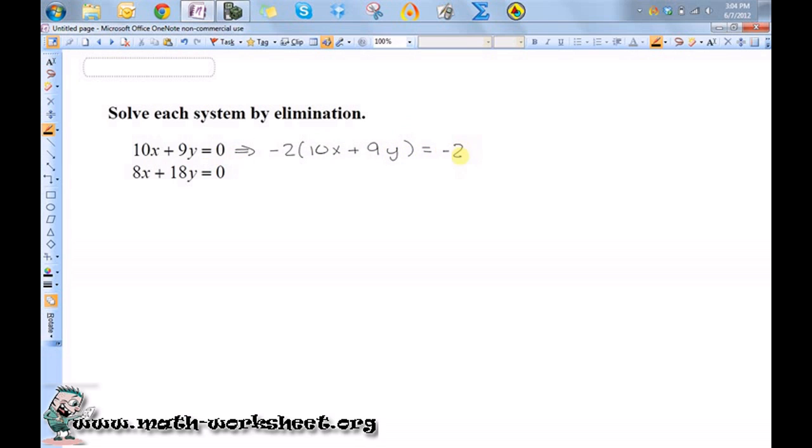Well, negative 2 times 0 is just going to end up being 0. So when I distribute the negative 2, I'm going to get negative 20x minus 18y equals 0.